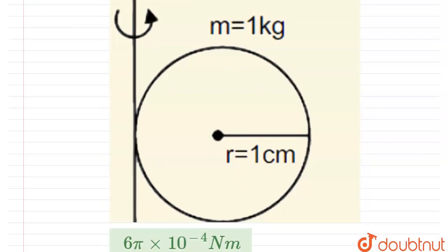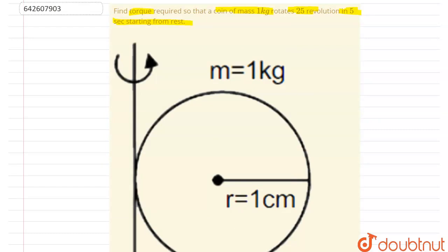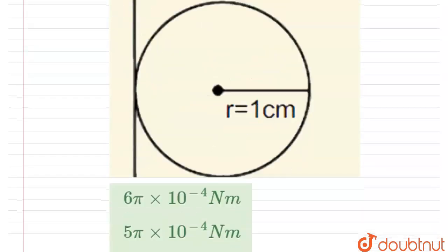here so that the coin could move 25 revolutions in 5 seconds starting from rest. If I apply the second equation of motion in circular motion, I will write here: theta equals omega initial times t plus